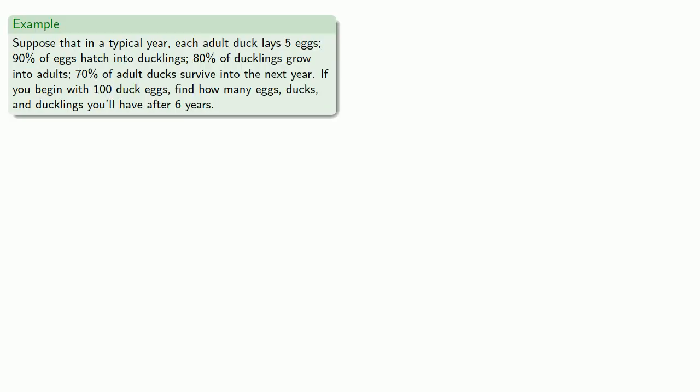For example, suppose that in a typical year each adult duck lays five eggs, 90% of eggs hatch into ducklings, 80% of ducklings grow into adults, and 70% of adult ducks survive into the next year. And if you begin with 100 duck eggs, let's find how many eggs, ducks, and ducklings you'll have after about six years. So a large part of mathematics and life is bookkeeping.